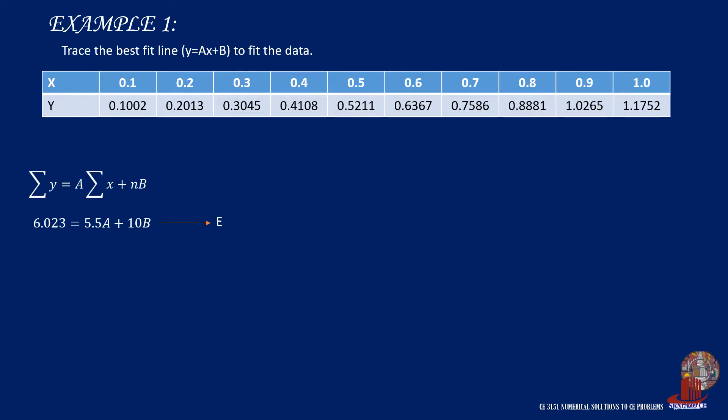With the table completed, plug values for both equations. In this case, we get 6.023 equals 5.5a plus 10b. This is now the modified first equation, denoted as equation 1a.